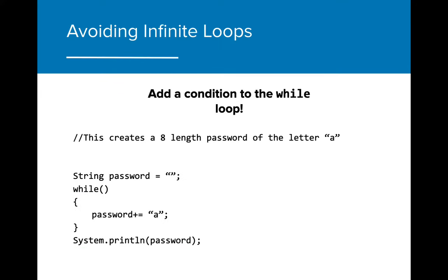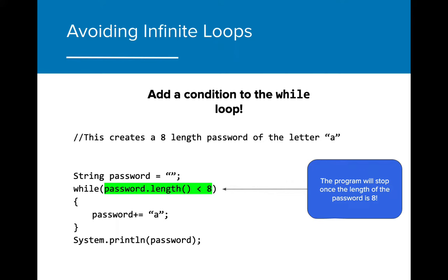Here's another practice problem. Figure out what condition we need to add to the while loop in order to get it to stop executing. For this one, we just need to add the correct condition. Since the password length is zero to start, and on each iteration through the loop an 'a' is added, we want to make sure that the program stops once the password is at length eight. We can make sure that happens by testing the length of the password each iteration through the loop. Once the password is the right length, the program will stop.